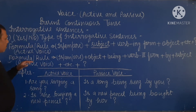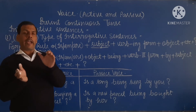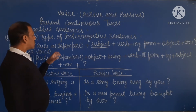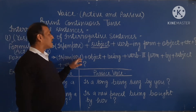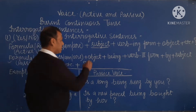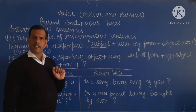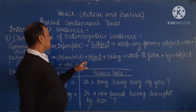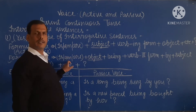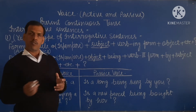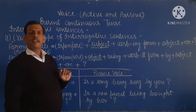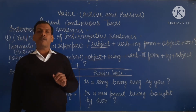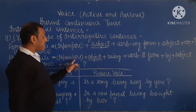Now, when we convert active to passive, here is the rule. First of all, we write 'is' or 'are' according to the object — not according to the subject, but according to the object. If the object is in singular form, then we write 'is'. If the object is 'I', then we write 'am'. If the object is in plural form, then we write 'are'.